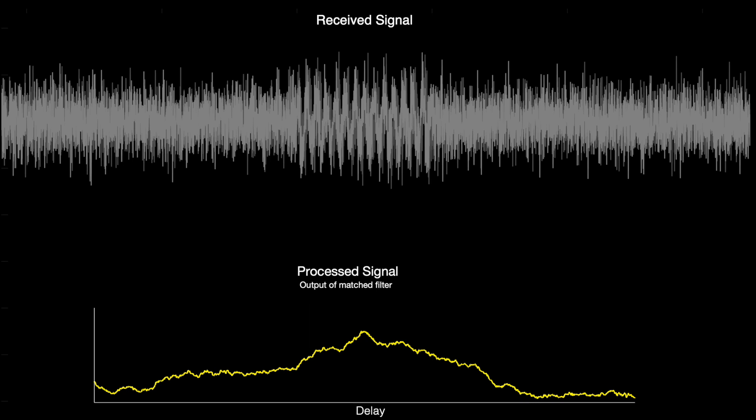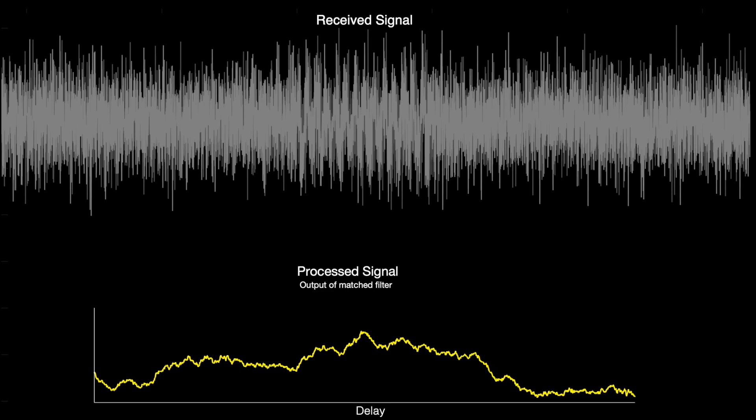Now, this is because in general, the random additive noise doesn't correlate very well with the template. So it won't make it through the matched filter as well as the highly correlated pulse does. But like with anything, there is a limit. Watch what happens as I continue to raise the noise floor.